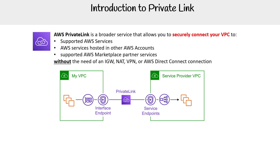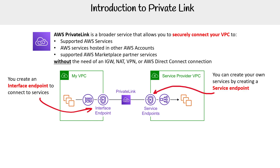There are two components to know about. The first is the interface endpoint — that is what's going to establish an endpoint so that you can go talk to Private Link. And on the other side of it, we have a service endpoint. This is relevant whether you are creating your own service or connecting to another service — there will be a service endpoint there for you.